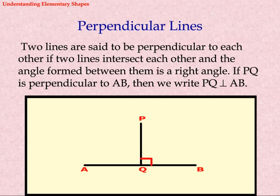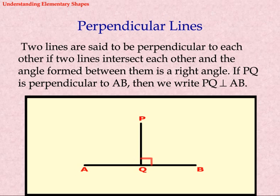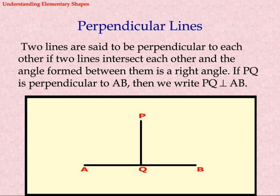Perpendicular lines: Two lines are said to be perpendicular to each other if the two lines intersect each other and the angle formed between them is a right angle. If PQ is perpendicular to AB, then we write PQ ⊥ AB.